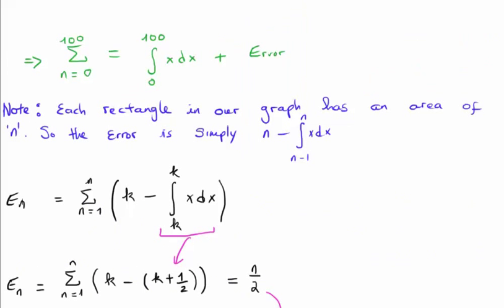So what we've seen is that summing the first 100 integers, or going from 0 to 100, is equivalent to doing the integral of x between 0 and 100 and adding an error term. The point to note here is that each rectangle in our graph has an area of n, in other words it's at the point n multiplied by width of 1.